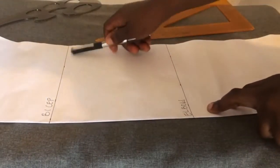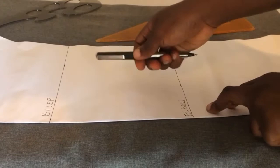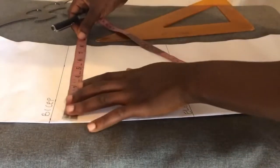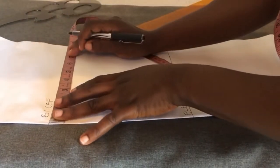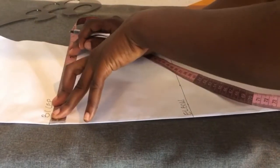So this is your bicep line. You take the circumference of your bicep. Mine is 13, so I'll be marking 13 divided by 2, which is 6.5. So I'll mark 6.5 here.